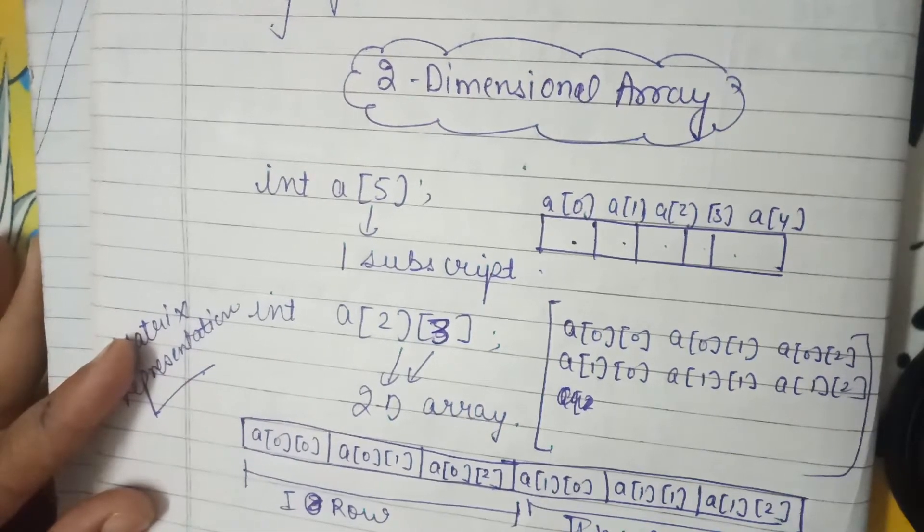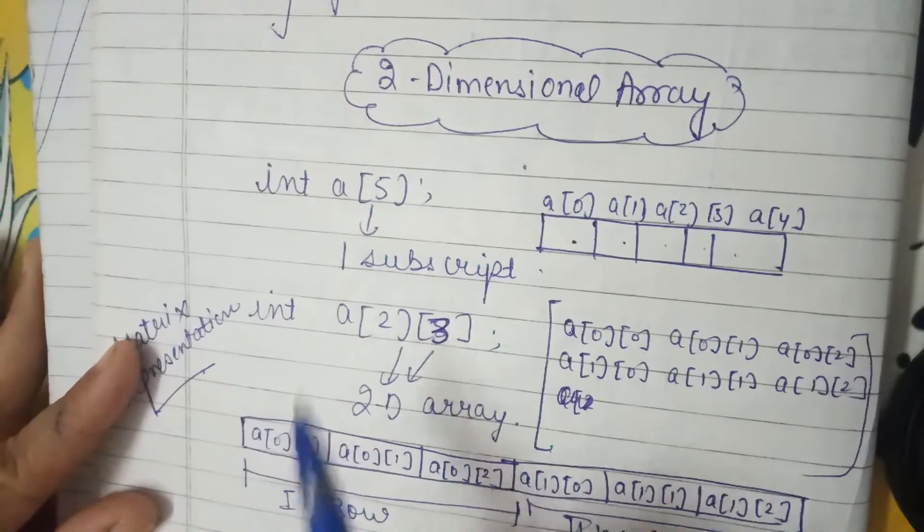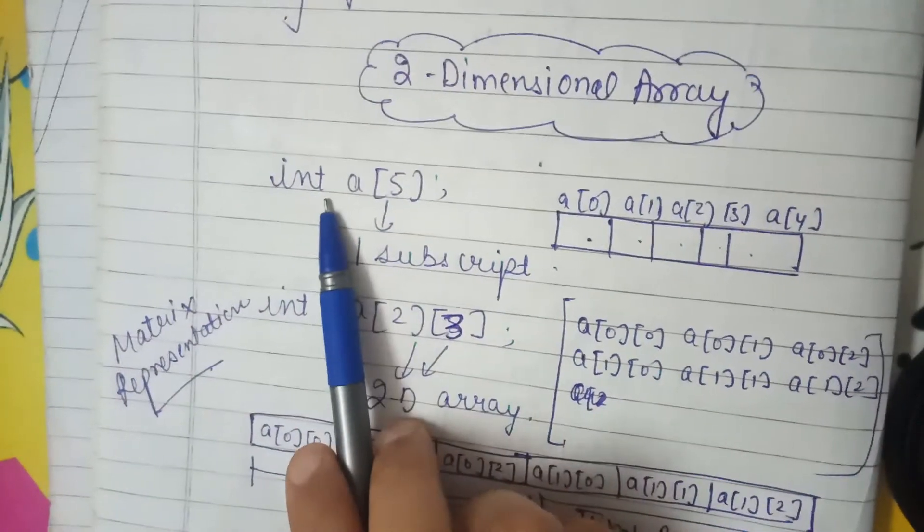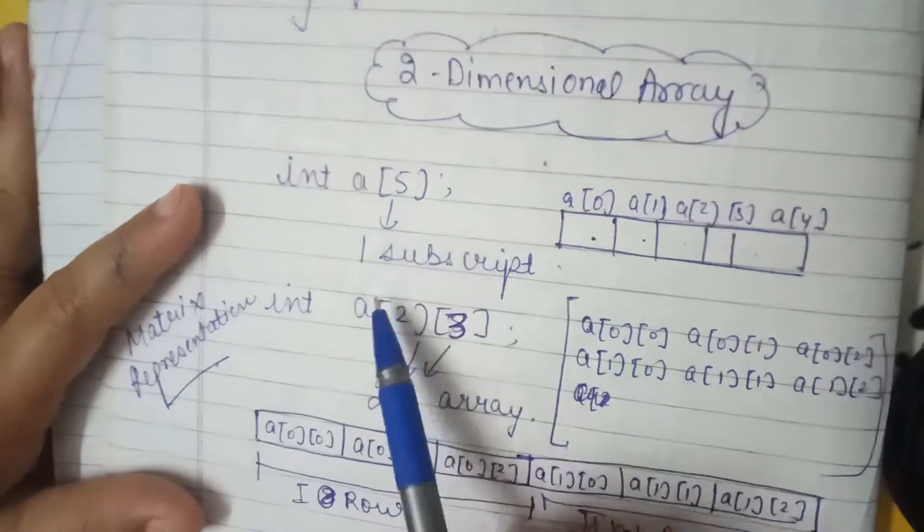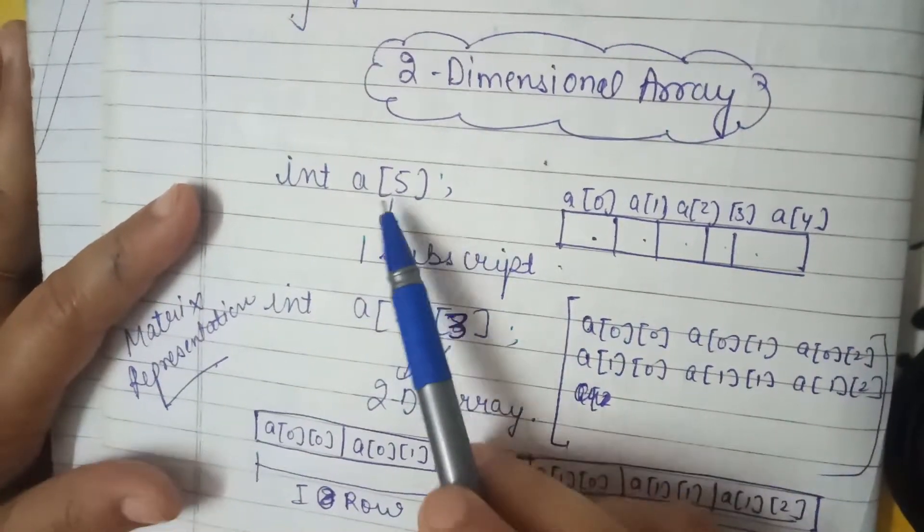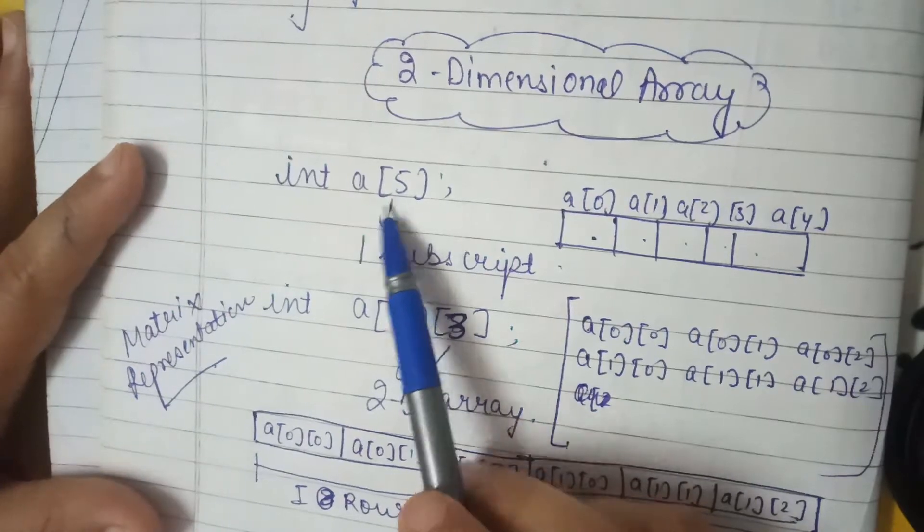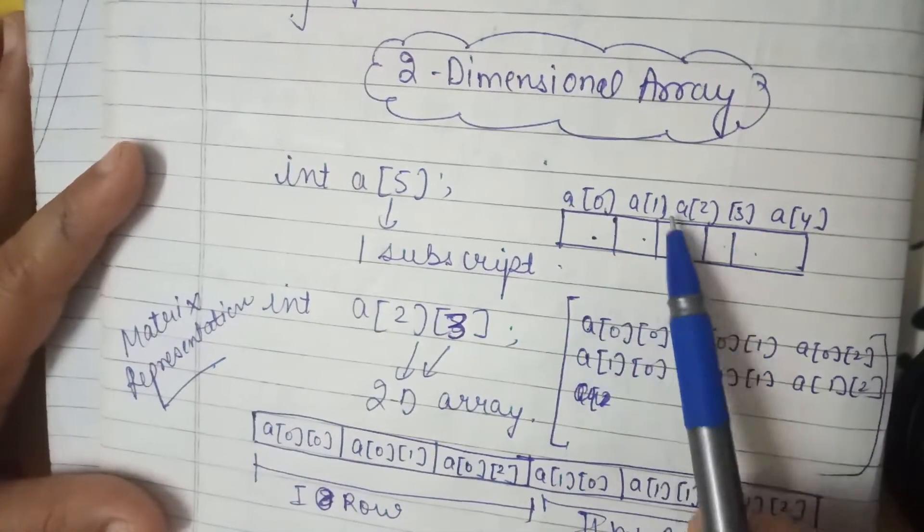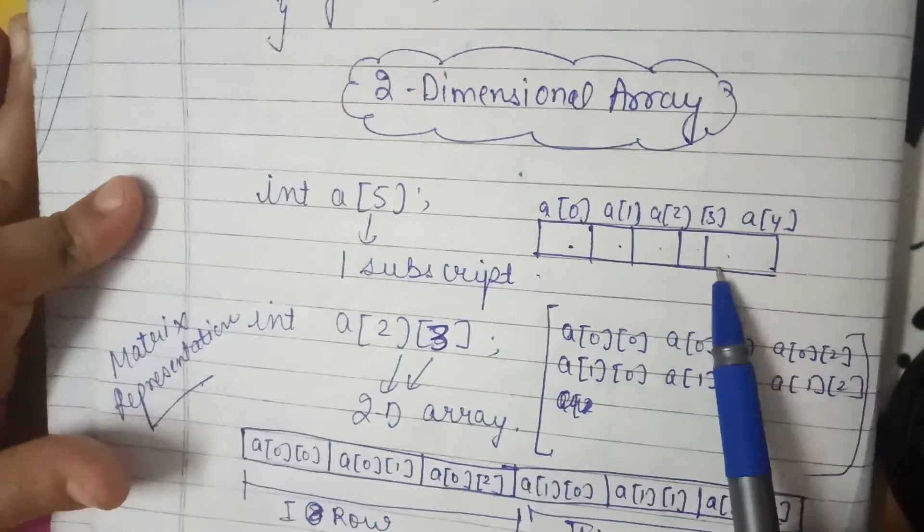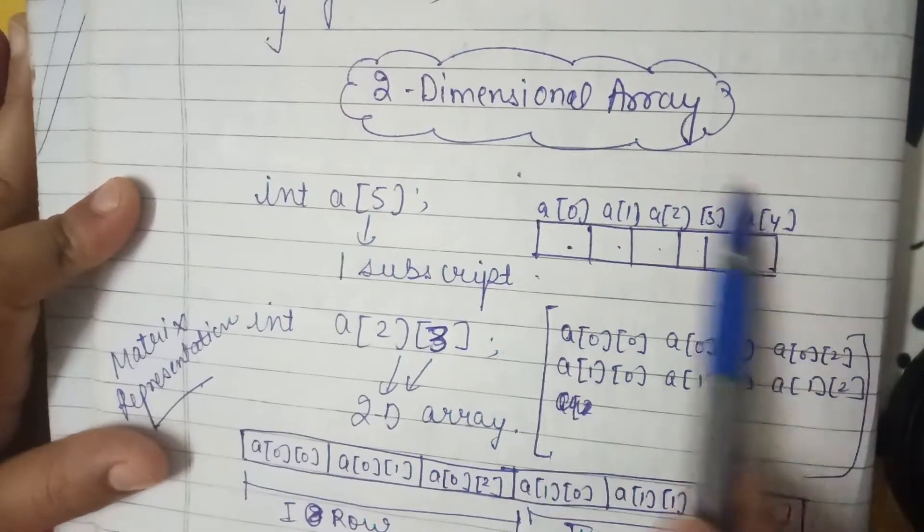First row size and second will be the column size. One-dimensional like example int a[5] means one subscript five, will show number of elements to store. Five like a[0], a[1], a[2], a[3], and a[4], means total number of elements to store is five.